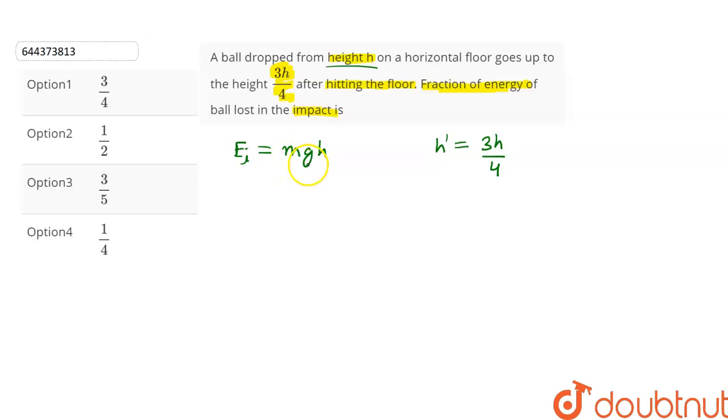of the ball and the acceleration due to gravity are constant, the final energy of the ball Ef will be equal to mgh', which comes out to be 3/4 of mgh. We have